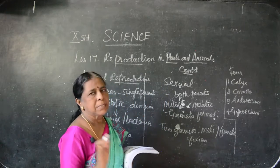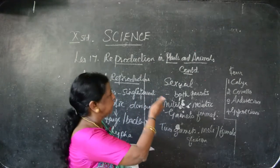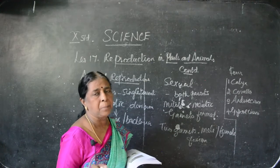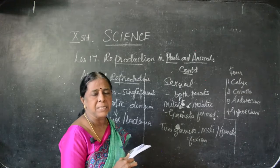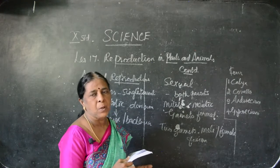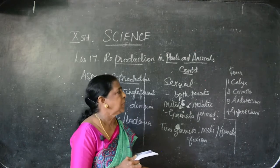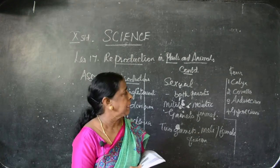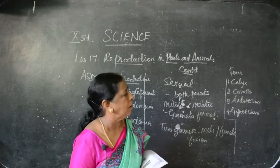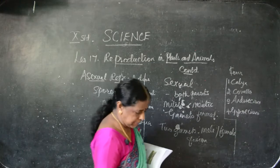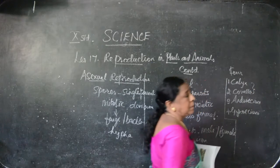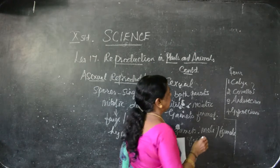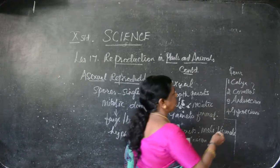We are going for sexual reproduction. The calyx and corolla are not directly helping for reproduction — they are indirectly helping, but we consider them as accessory organs. Accessory means to beautify the flower. The androecium and gynoecium are the reproductive organs. Calyx is the outermost whorl of the flower, mostly green in colour, protecting the inner parts of the plant.